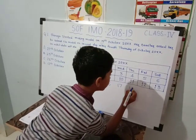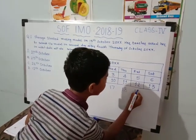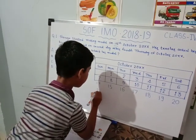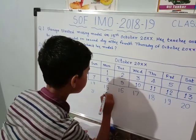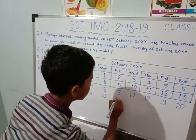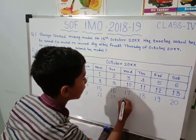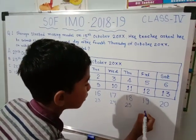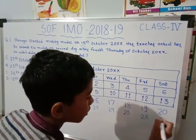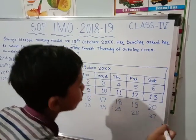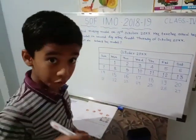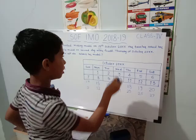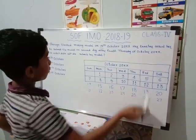We continue filling in the dates: 18, 19, 20, 21, 22, 23, 24, 25, 26, 27. Now we have to see where the 4th Thursday is. The 4th Thursday is here — that is the 25th. They told the 2nd day after the 4th Thursday.